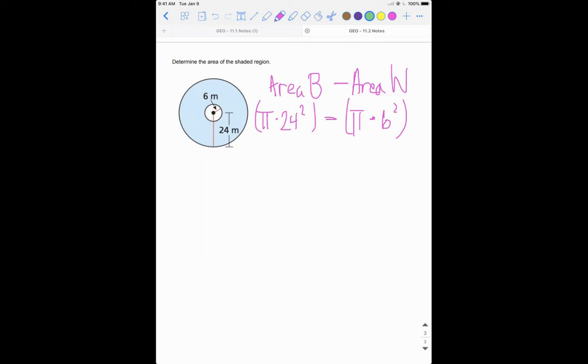So if we do each one of these in sections, you get 1809.56 minus 113.10, and that will give us the area of just this shaded region.